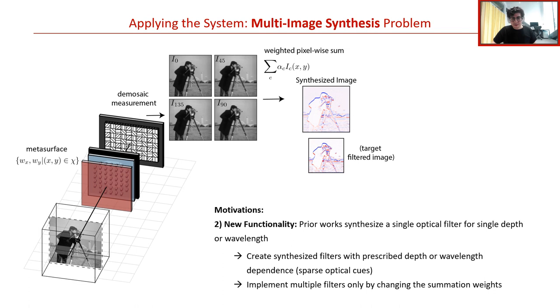Our second motivation of this problem is that we can demonstrate new processing functionalities never previously shown. Specifically, in the past, only a single optical filter defined for a single depth or wavelength was applied in the synthesized image, which is not in itself particularly useful. In this work, however, we show that one can create synthesized filters that have a prescribed wavelength dependence or depth dependence. In other words, the filter that is applied in the synthesized image will depend on properties of light that are not directly measured by a photosensor. We also show that instead of applying a single filter, we can code multiple filtering operations in the captured images and selectively apply them by only changing the summation weights.